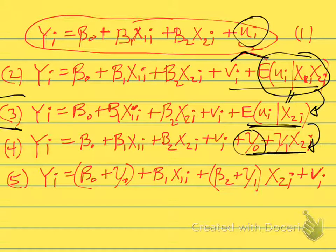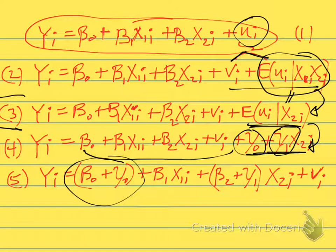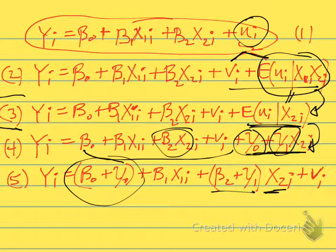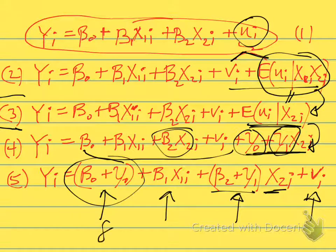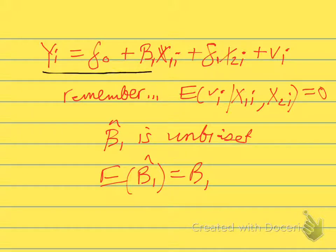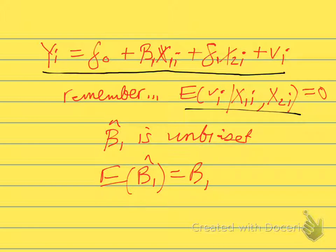Now we do some rearranging. γ₀ joins with β₀ and is collected here. The γ₁x2ᵢ term can be grouped with the β₂x2ᵢ term, combining them under a common factor of x2ᵢ. So we regroup and notice what we have: a regression with a constant, β₁x1ᵢ, a coefficient on x2ᵢ, and an error term vᵢ. We rename the constant δ₀ and the coefficient on x2ᵢ as δ₁, giving us yᵢ = δ₀ + β₁x1ᵢ + δ₁x2ᵢ + vᵢ.